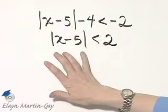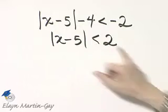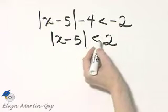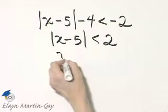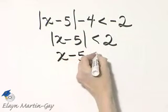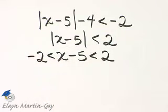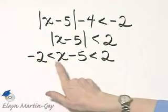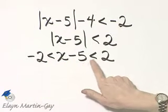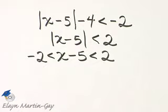And now I have an absolute value less than some positive number. For this absolute value to be less than 2, what's inside the absolute value bars, the x minus 5, must be between 2 and negative 2. So I have negative 2 less than x minus 5 less than 2. And notice, this is the compound inequality now that we will solve.